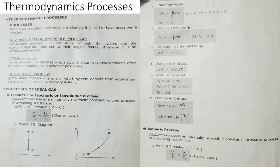Heat transfer is equal to change in internal energy. Change in entropy: from the equation dS equals dQ over T, do the derivation. Change in entropy S is equal to mCv times ln(T2 over T1). Next is the isobaric process, which is an internally reversible constant pressure process of a working substance.